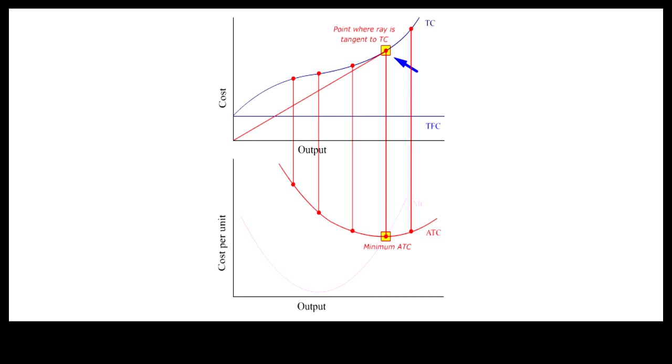Observations: First, ATC reaches its minimum when the ray from the origin is tangent to TC. Since the slope of this tangency measures both MC and ATC, MC therefore intersects ATC at ATC's minimum point.